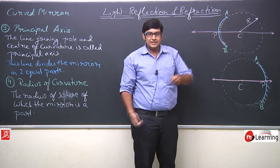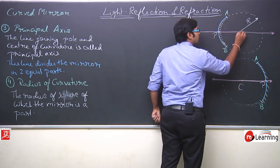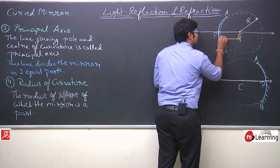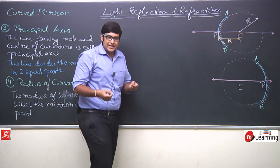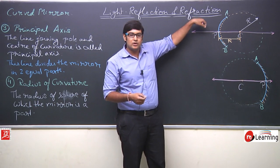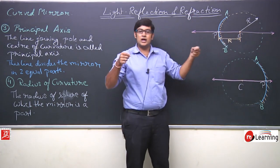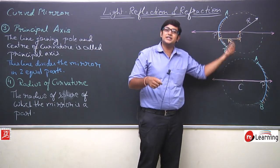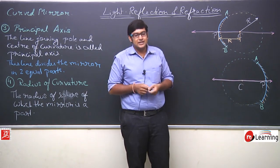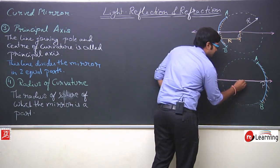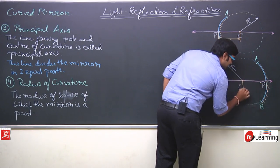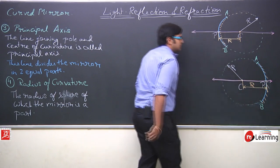We can also say that radius of curvature is basically the distance between pole and center of curvature. Because the center of curvature is the center of the sphere, and the pole lies on the mirror's surface — joining them forms the radius. For example, this distance shown here is the radius of curvature R, for both concave and convex mirrors.